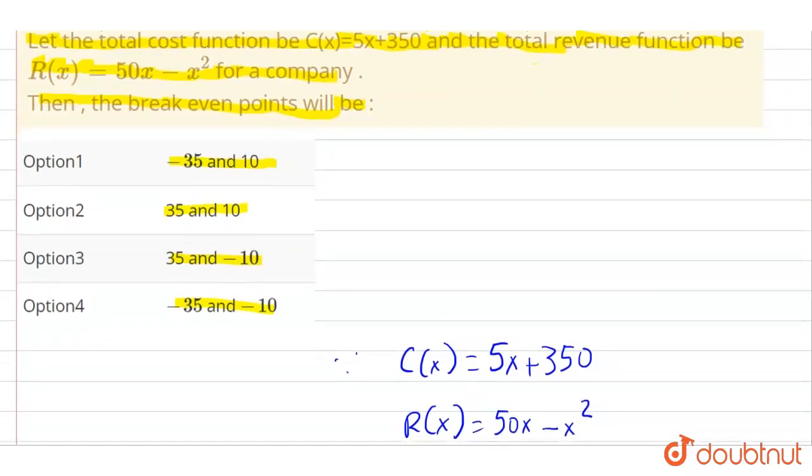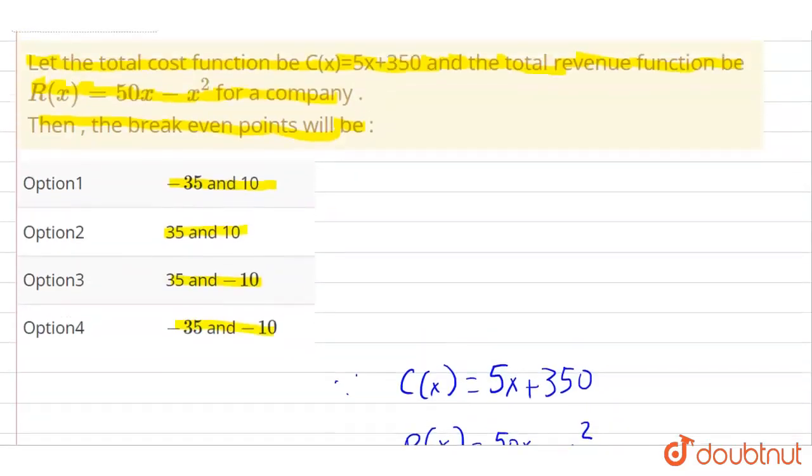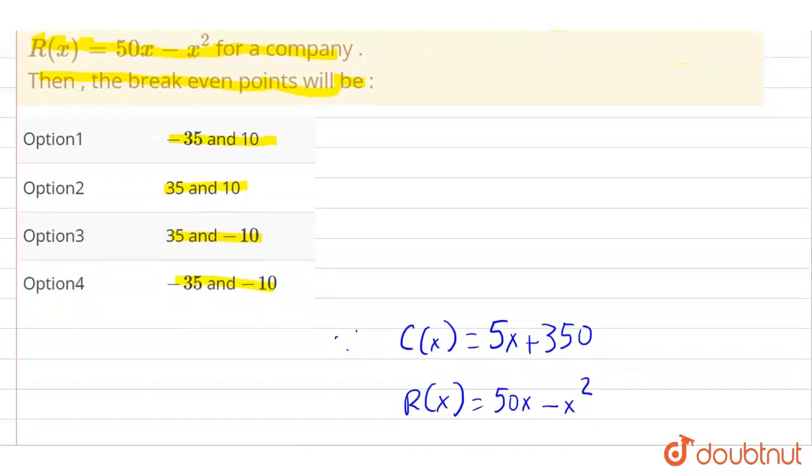Now we have to find the break-even points. So for break-even point, first of all, we find the profit function. Since we know profit function is represented by P(x), which equals R(x) minus C(x), that is the total revenue function minus the total cost function.